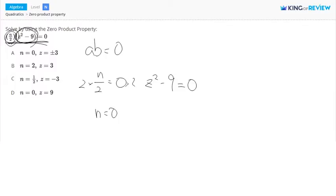And what about z squared minus 9? Well, if we add 9 to both sides, we're going to get z squared is equal to 9. And if we take the square root, we're going to get z is equal to plus or minus 3.